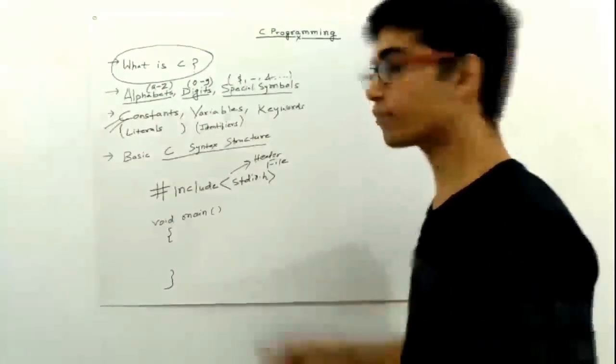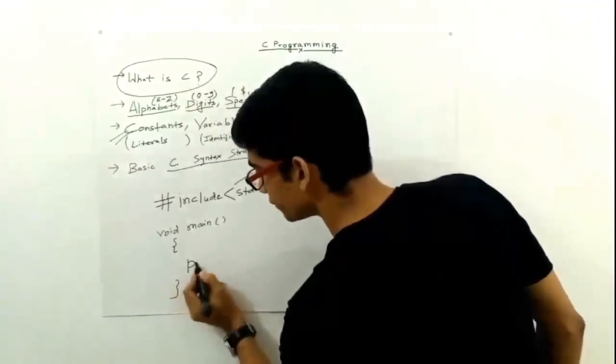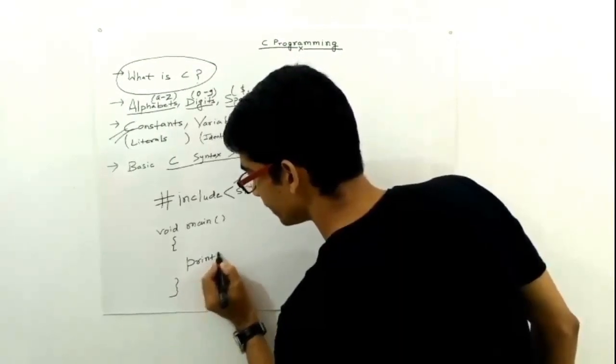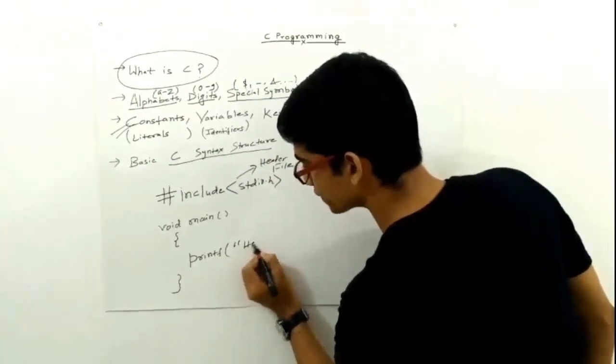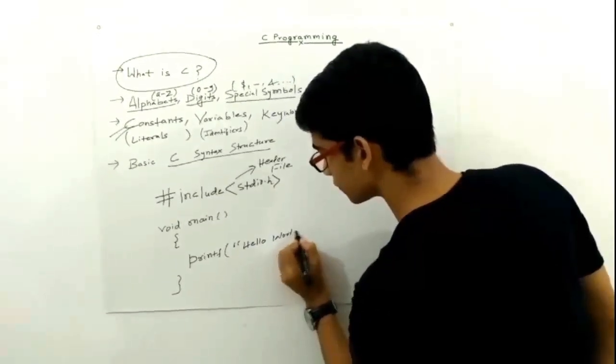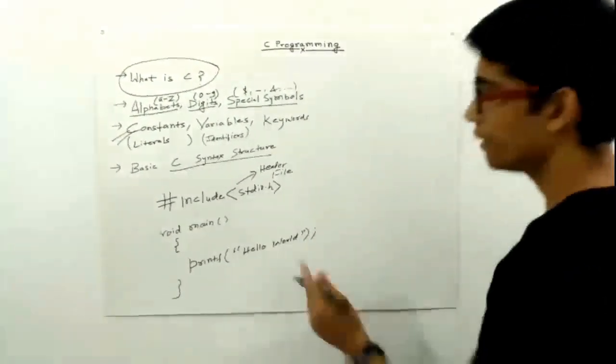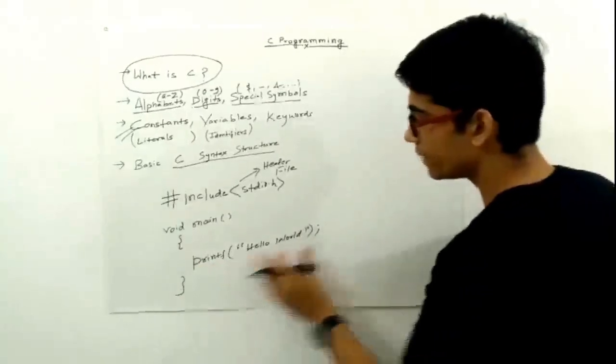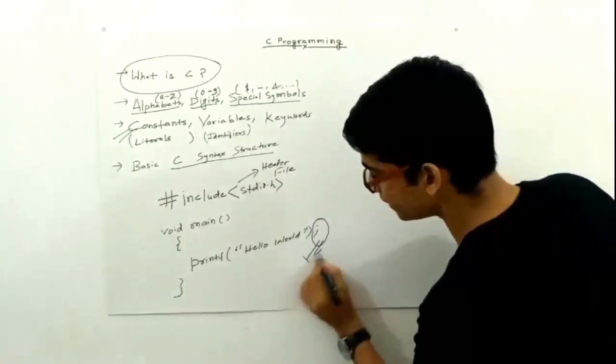For that, we have a function known as printf function. We write printf and the message that we want to print on the screen: hello world. This is a semicolon. So in C, every statement is terminated by this. This is actually the statement terminator.